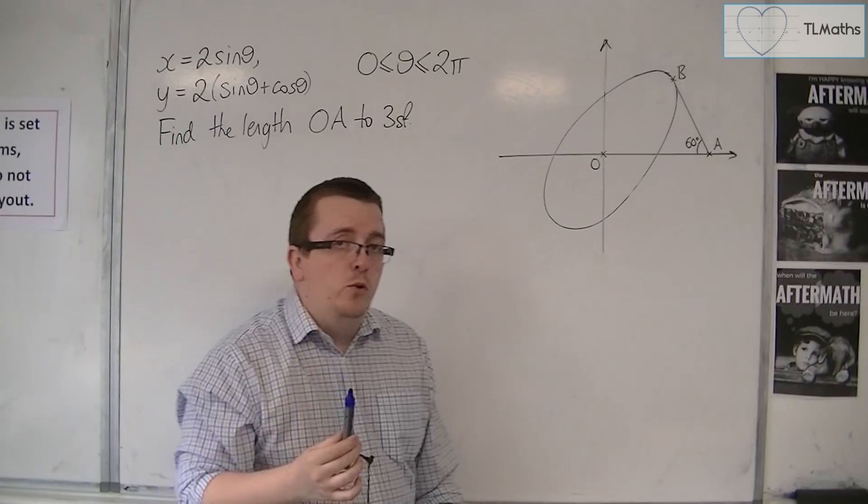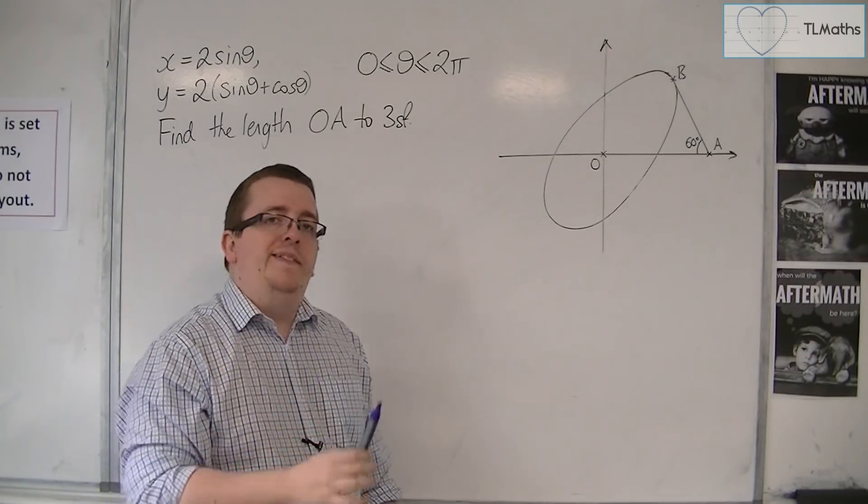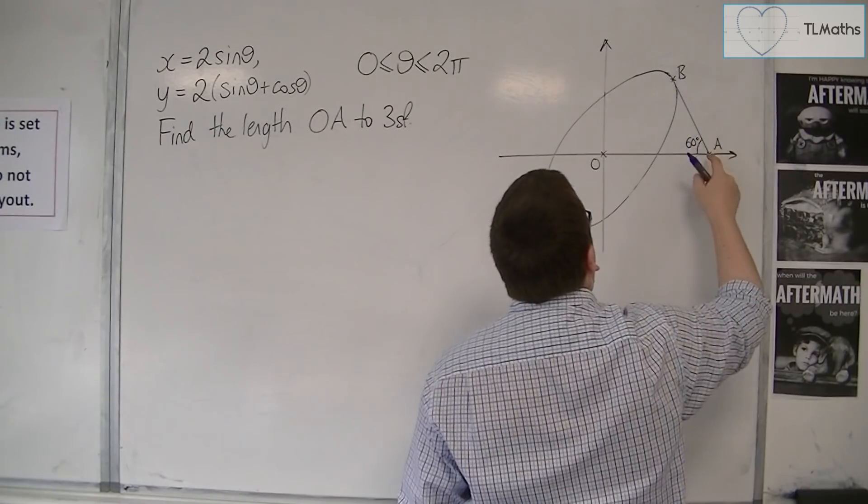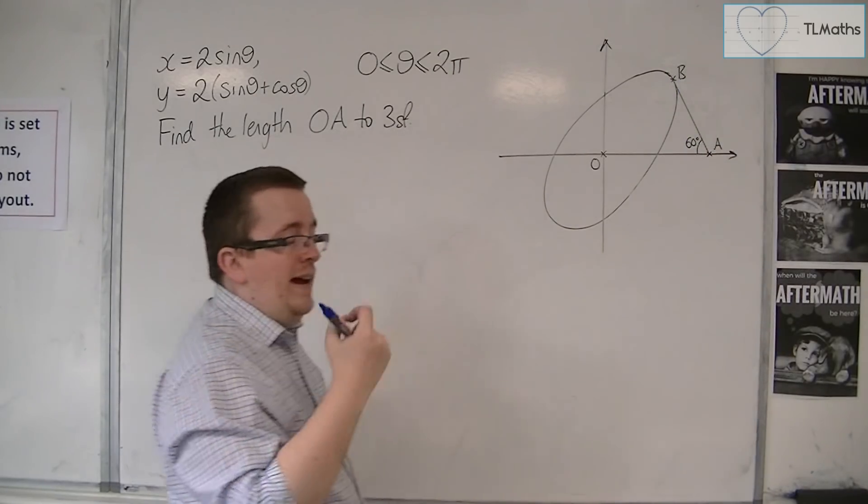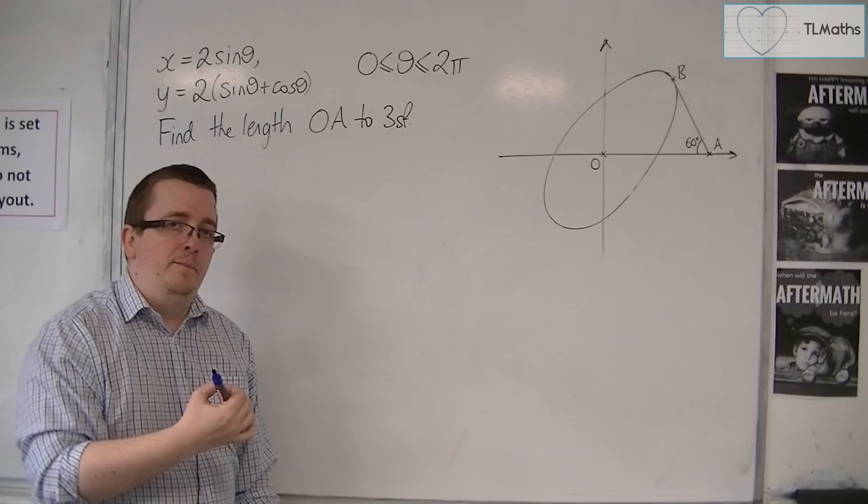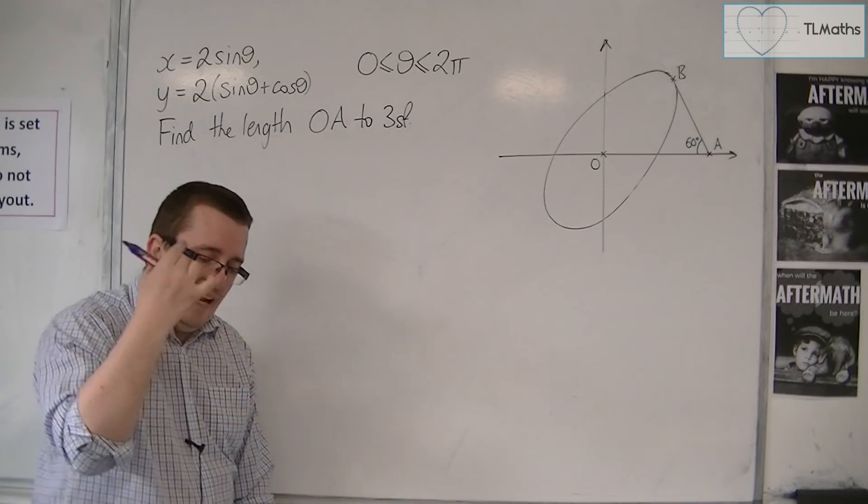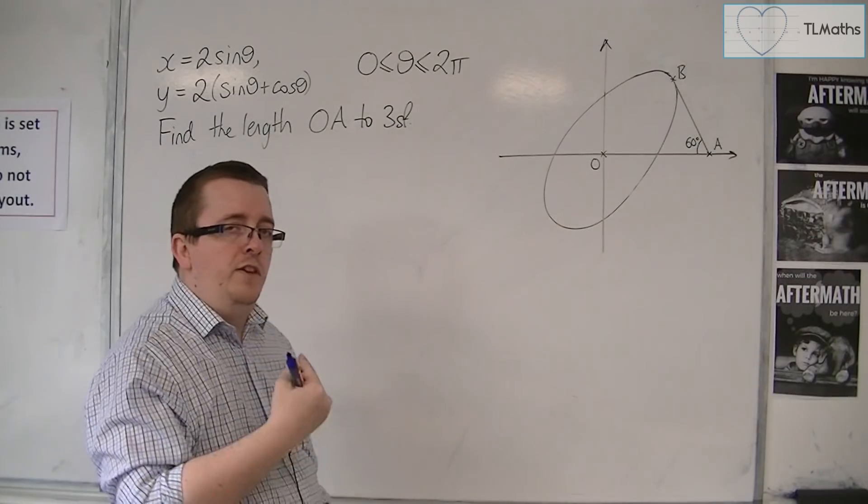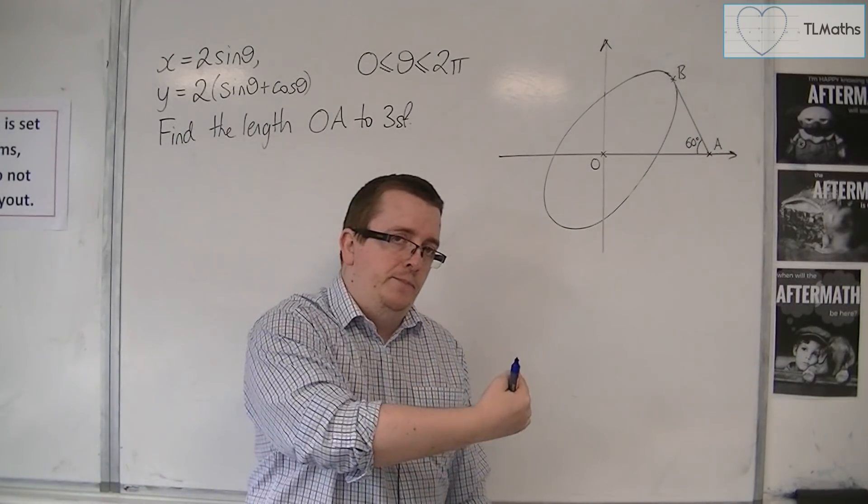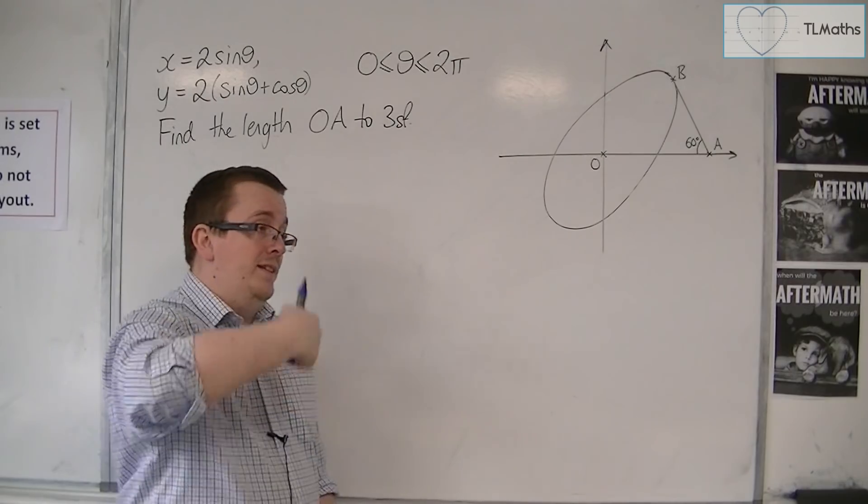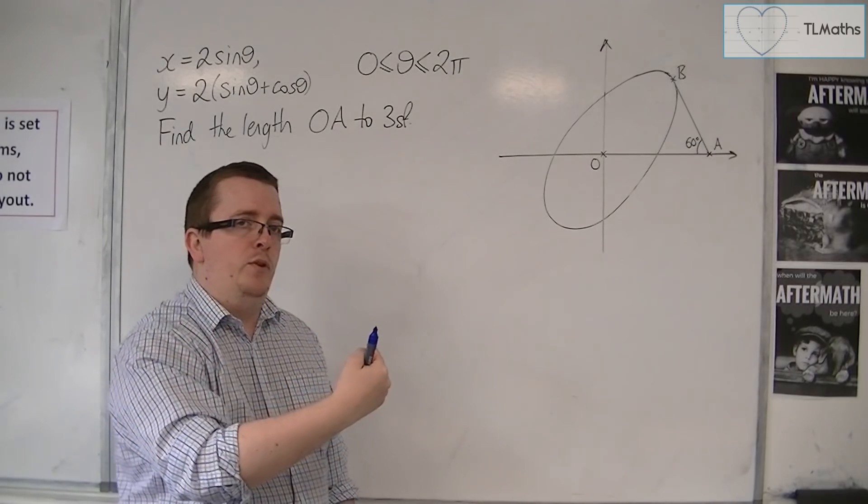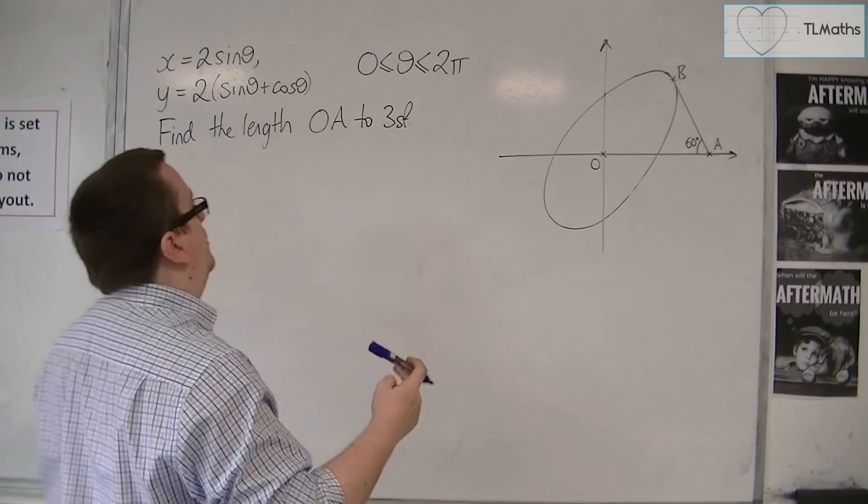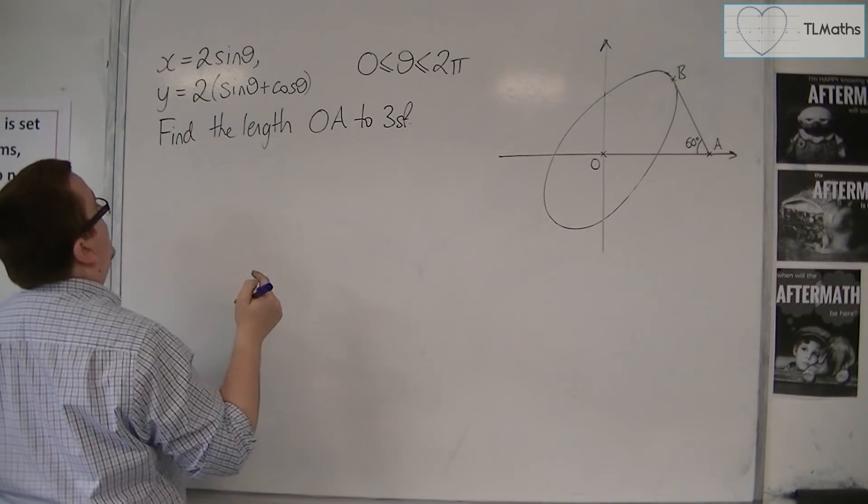To work out the coordinates of B, I know that at B there is a tangent line that meets the x-axis at 60 degrees. Since it's a tangent line, I need to find the gradient of the curve at that point. To find the gradient, I need to find dy by dx.